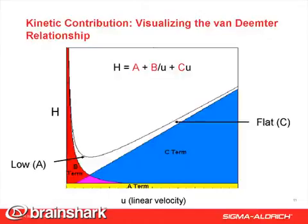The A, B, and C terms of the Van Deemter equation have actionable variables in them that we can alter as column manufacturers to reduce H, which increases N, which increases resolution.